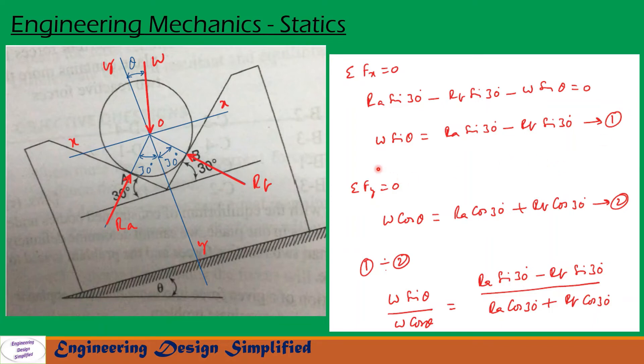Now, let us resolve forces along YY plane. Along YY plane, we have the component of W along YY will be W cos theta that is acting vertically downwards along this YY plane. That is equal to these two forces, the vertical component, the YY components will be acting upwards. We have moved to the right hand side of the equation.